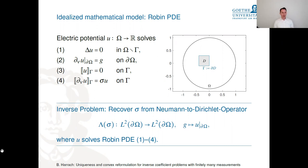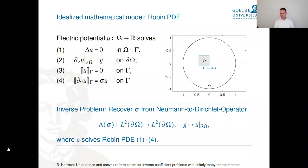The question is: can we recover this interface coefficient from the Neumann-to-Dirichlet operator? This is much simpler than EIT because we have fewer unknowns (only σ on the inner boundary Γ) and every part of the interface can be directly reached from the outer boundary without passing through other unknown parts — unlike EIT where inner pixels are shielded by outer pixels.